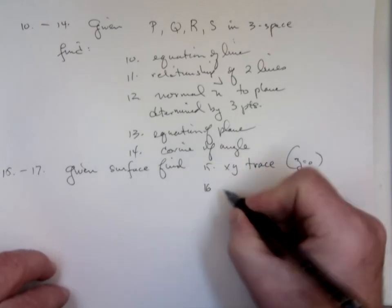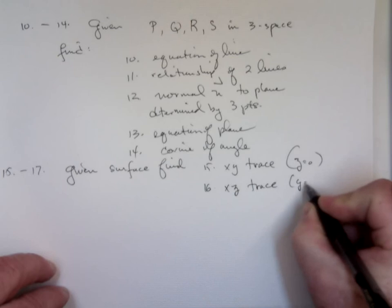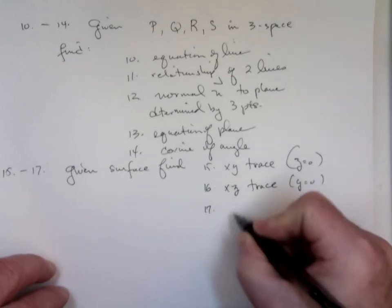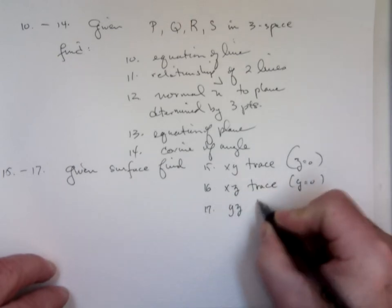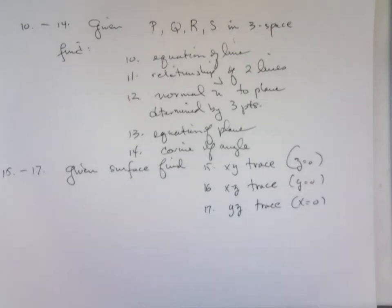You find the XZ trace. Let Y equals zero. And YZ trace by setting X equals zero. And remember, tomorrow I'll take any questions you have on anything. That's that section. That should be a breeze.